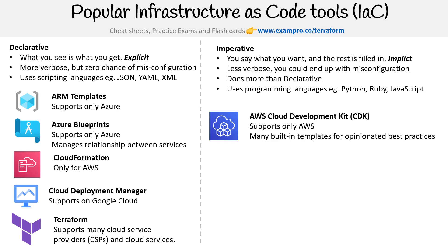AWS has their own called Cloud Development Kit, CDK. It technically only supports AWS — I say technically because HashiCorp has a very cool library that allows you to generate Terraform HCL files, which allows you to work with anything. But when talking about CDK on its own, it's just for AWS. Then you have Pulumi — it supports AWS, Azure, GCP, and Kubernetes, so it can do a lot.